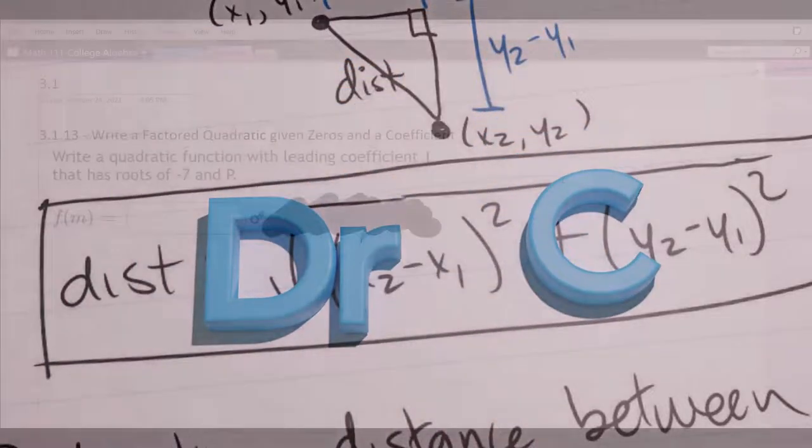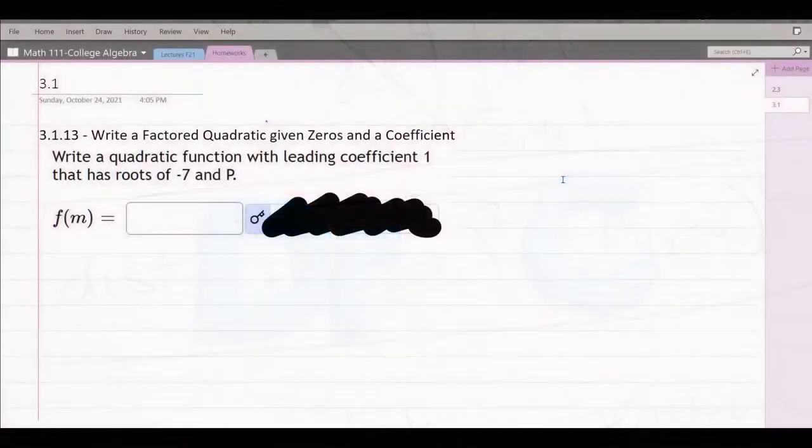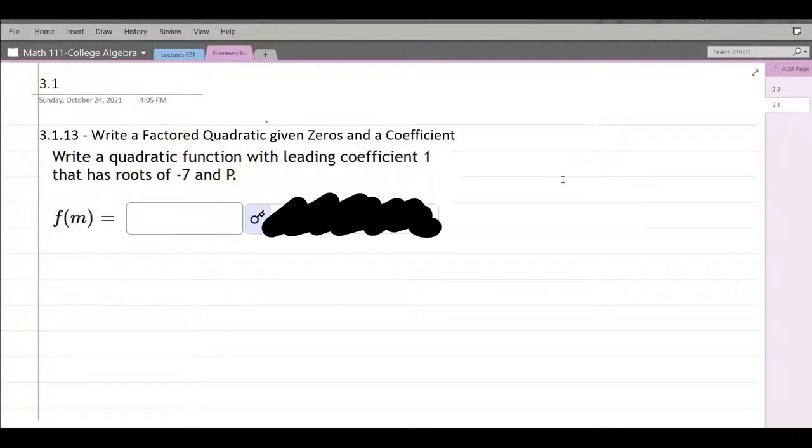We're going to write a polynomial given the roots, also known as the zeros or x-intercepts. And this is quadratic, so it's degree 2.